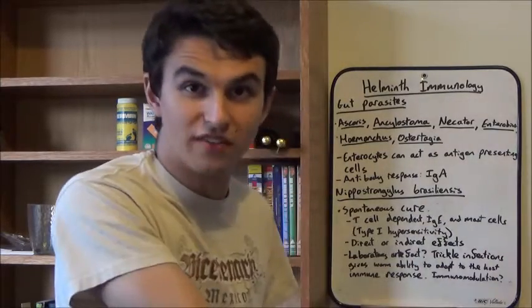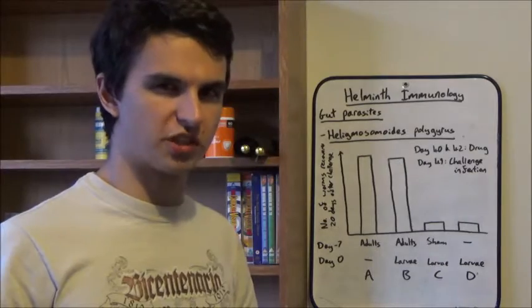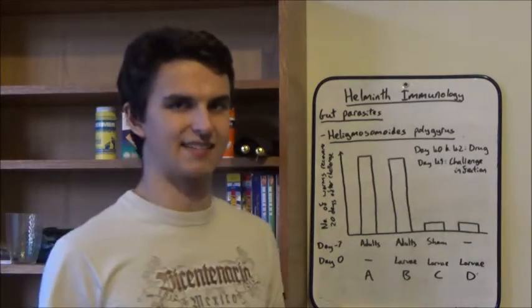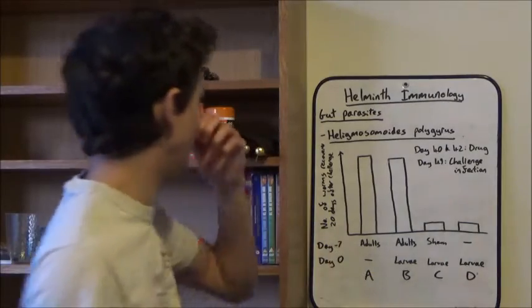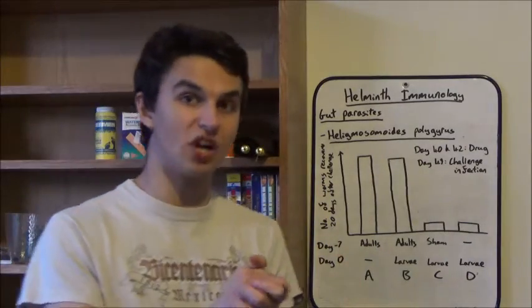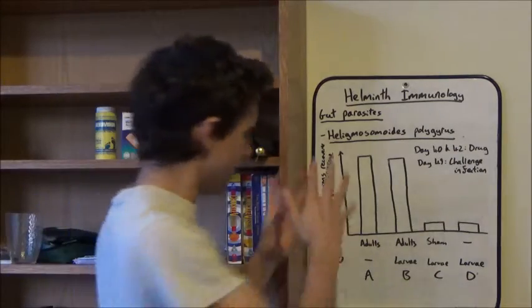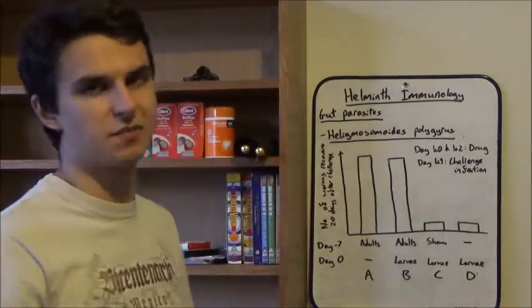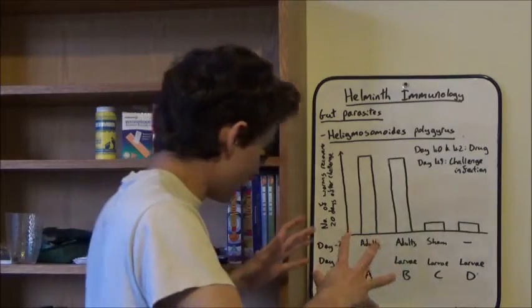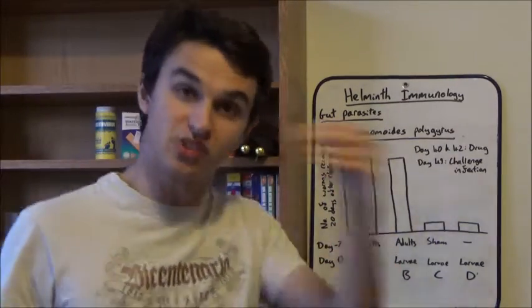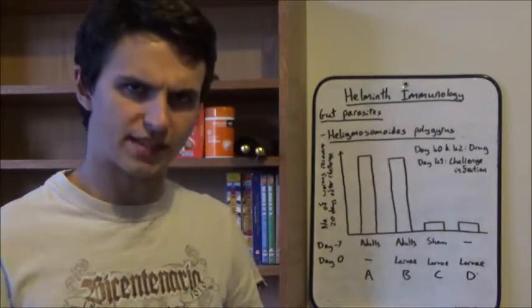So the first ones to infect the rat are affecting the immune system slightly, making it easier for the next batch of larvae to infect. And so on and so on. Now it's not just Nippostrongylus brasiliensis that takes on this immunomodulation tactic. This guy does it as well. Heligmosomoides polygyrus, which is another rat nematode. And this is a study basically looking at immunomodulation. Now, the whole methods behind the study are quite complicated. But the results are actually quite simple.